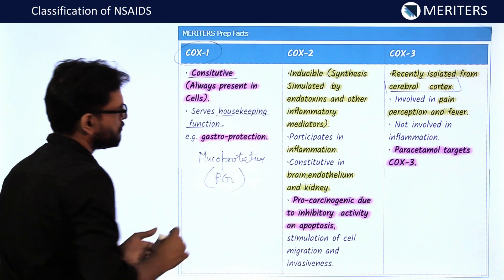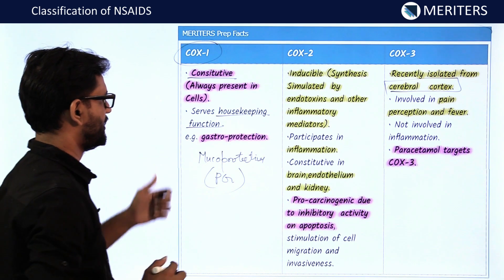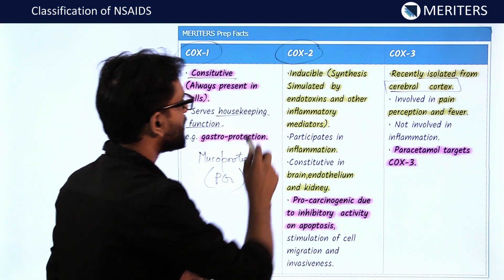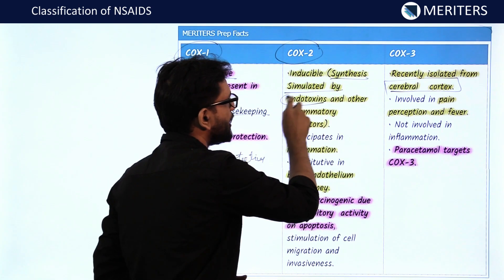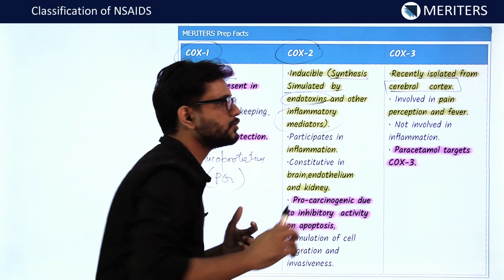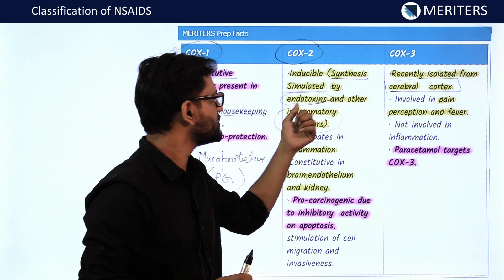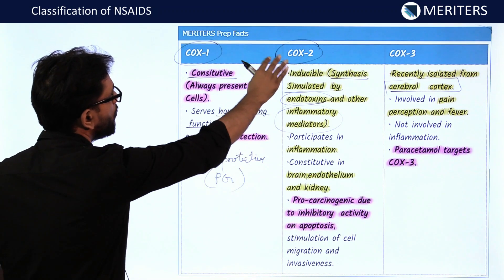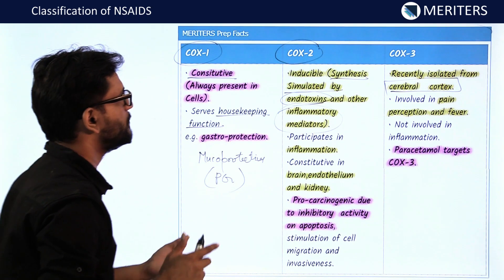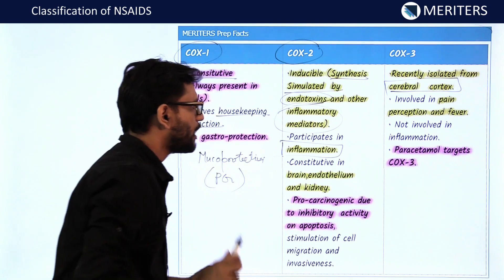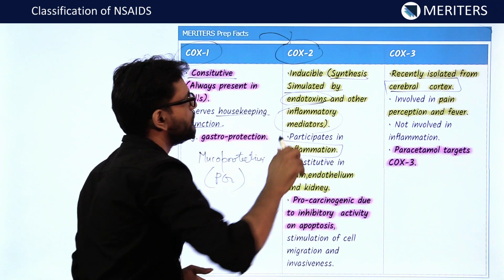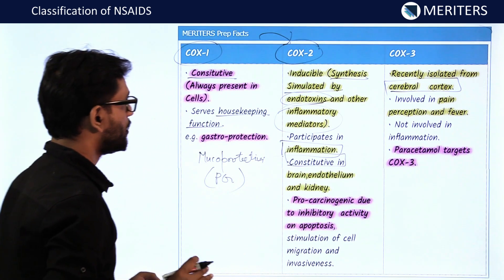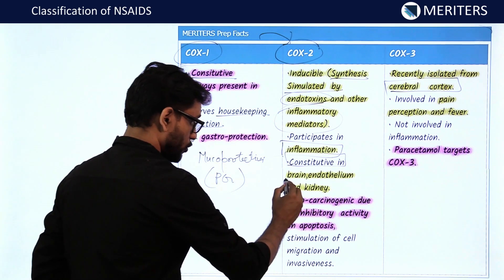COX-2 is inducible — it must be synthesized and stimulated by endotoxins or inflammatory mediators to act. When endotoxins or inflammatory mediators activate COX-2, it produces prostaglandins that participate in inflammatory reactions. Drugs that inhibit COX-2 are therefore called anti-inflammatory.